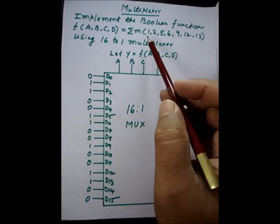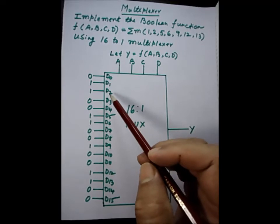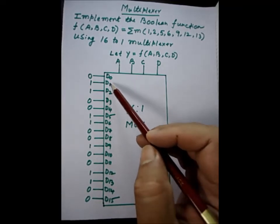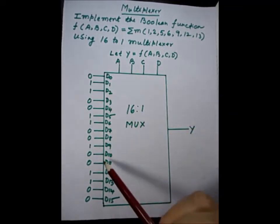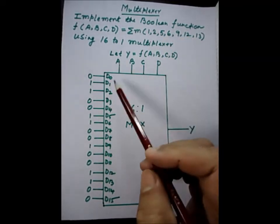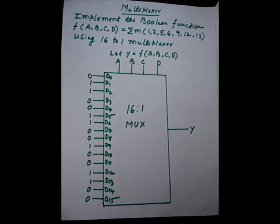You can assign directly: consider the subscript of the minterm M — if it is present in the expression, put the corresponding D input as 1. You can do it very fast. That is how we realize a Boolean function in a 16-to-1 multiplexer.